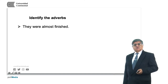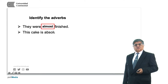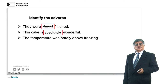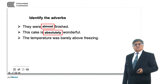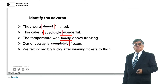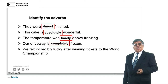Please identify the adverbs. They were almost finished — finished is the adjective, almost is the adverb. This cake is absolutely wonderful — wonderful is the adjective, the adverb is absolutely. Freezing and above are modified by barely — above is an adverb and barely is the modifying adverb of degree. Our driveway is completely frozen — frozen is the adjective and completely is the adverb. We felt incredibly lucky after winning tickets to the world championship — incredibly is the adverb of degree and lucky is the adjective.